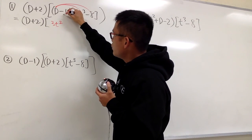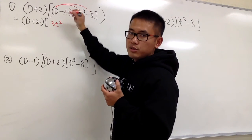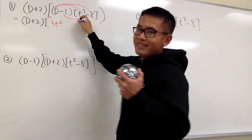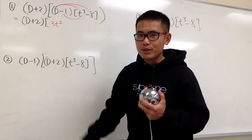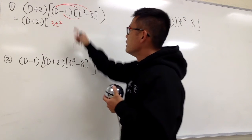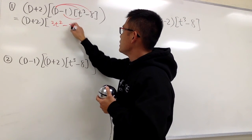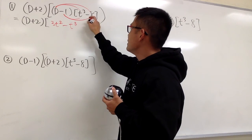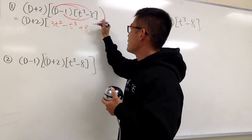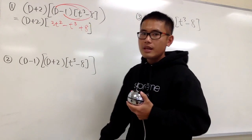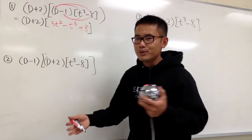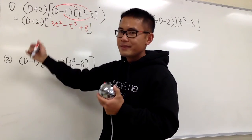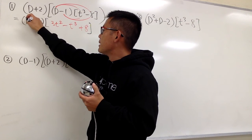The negative 1 is just a regular multiplier — negative 1 times t³ gives negative t³, and negative 1 times negative 8 gives plus 8. Now we apply the outer operator (D+2), pairing things up.